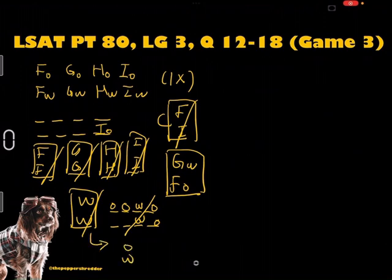This means that in the upper position of wall 4, there must be a watercolor because there is already an oil painting in the lower position. Because F and I cannot be placed on wall 4, either G's watercolor or H's watercolor can be placed in the upper position of wall 4.